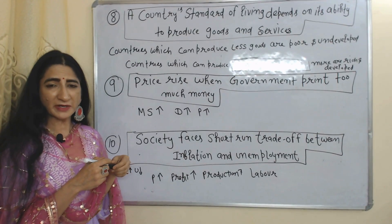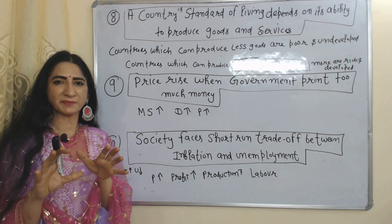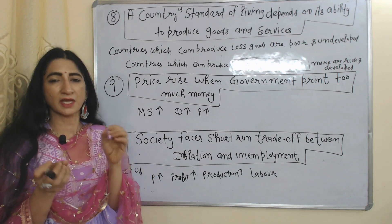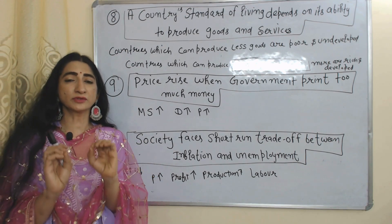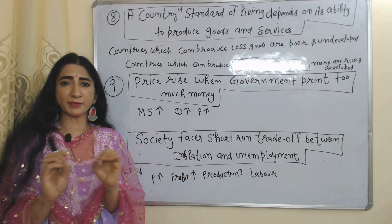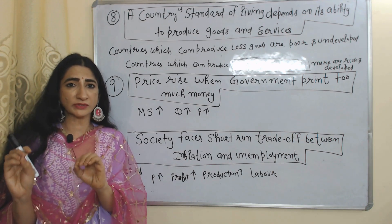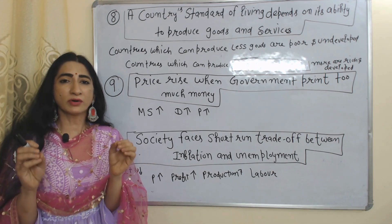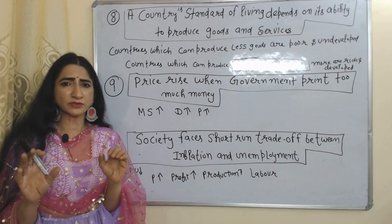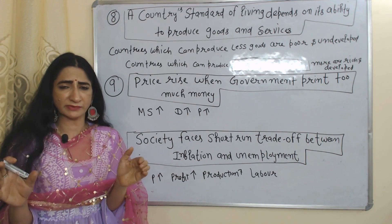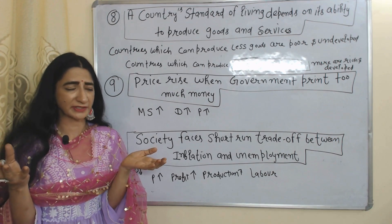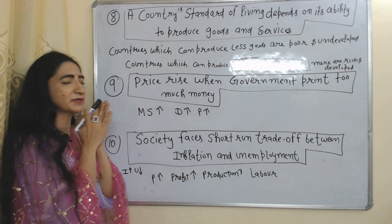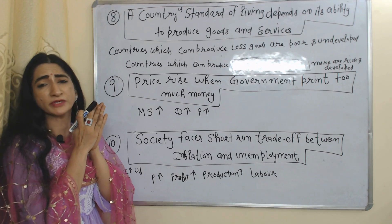The next principle is a country's standard of living depends on its ability to produce goods and services. According to this principle, countries which can produce more goods and services are rich and developed countries, while countries which cannot produce more goods and services are poor and underdeveloped countries.